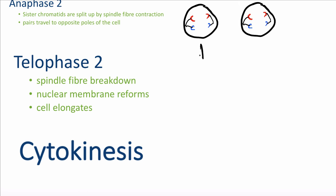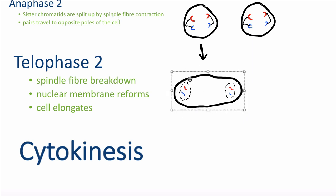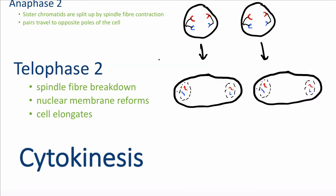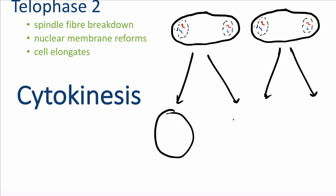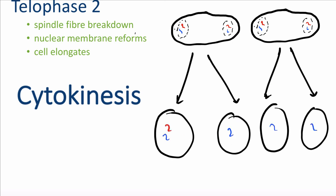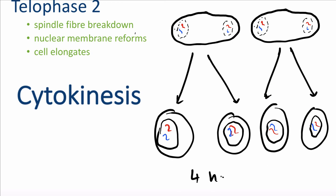In telophase 2, the cells elongate, the nuclear membrane reforms, and the spindle fibers break down. The final step is cytokinesis — the two cells each split, forming four cells in total, each with one of every chromosome. These four cells are therefore haploid, and they will eventually become either a sperm cell or an egg cell.